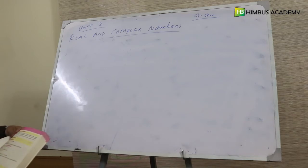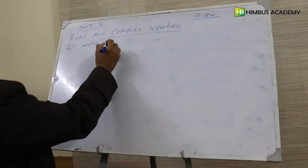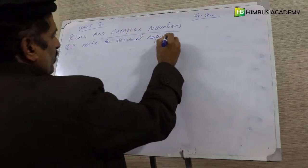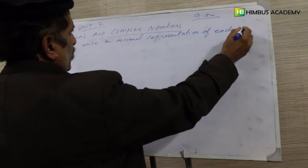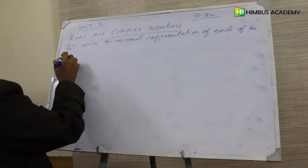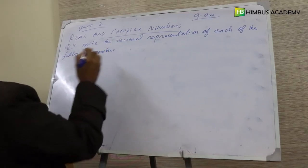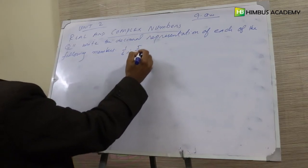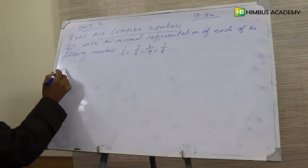Question 11: Write the decimal representation of each of the following numbers. The numbers are 1 over 6, 5 over 6, 2 over 9, and 1 over 8. In numbers ko decimal mein represent karna hai.